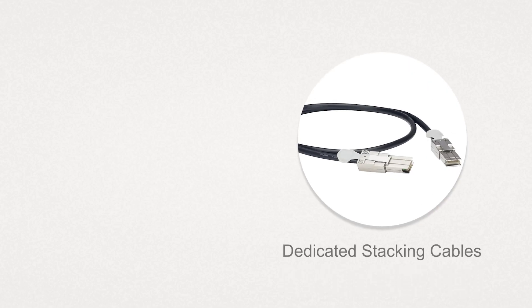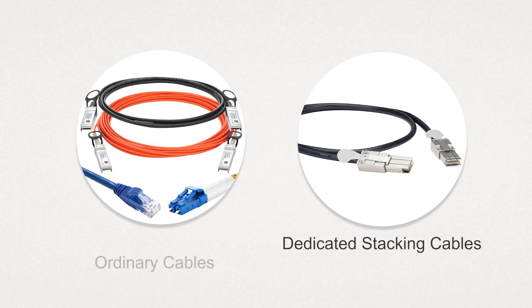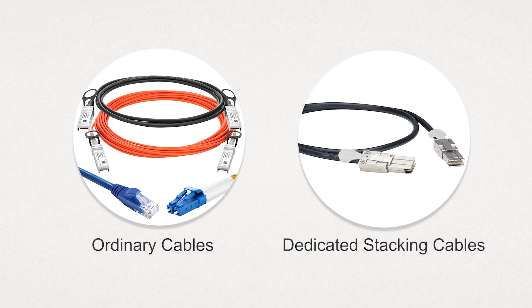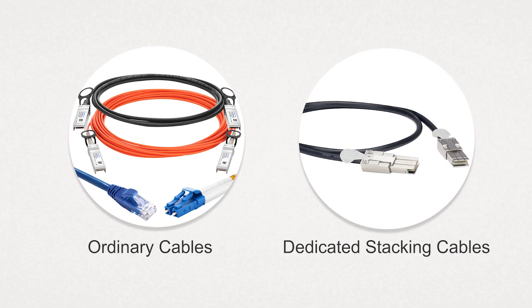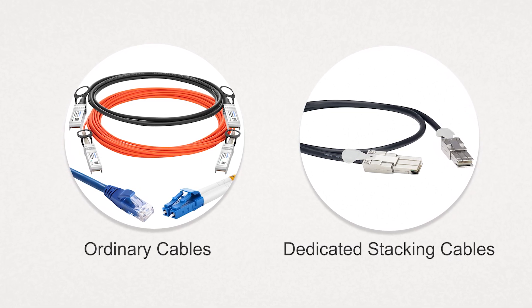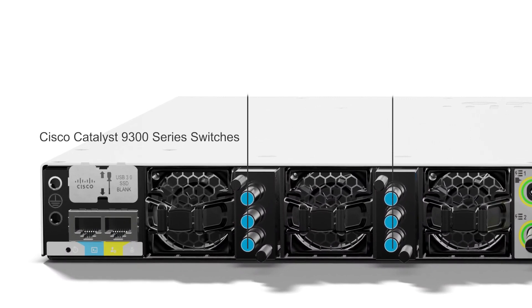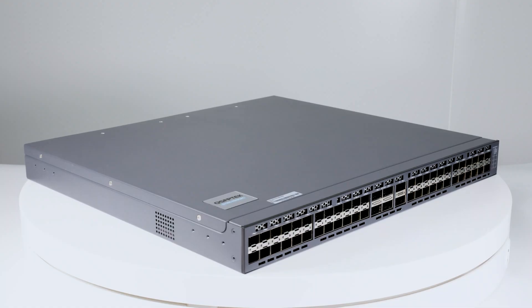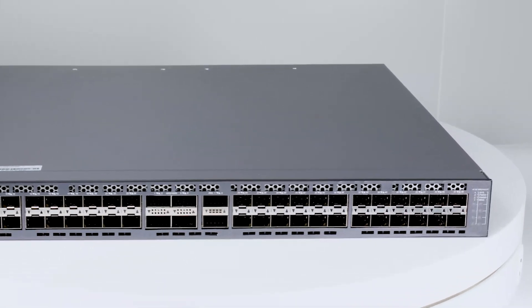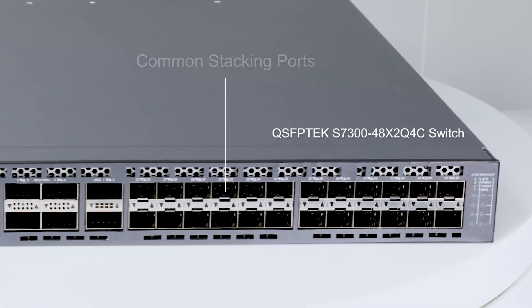Dedicated stacking cables are not ordinary Ethernet port cables. There is no unified standard, and the specifications of different switch vendors are different, with purchase costs typically higher. For instance, the Cisco Catalyst 9300 switch uses dedicated stacking cables, with its two stacking ports located on the rear panel of the switch to support the StackWise 1T 480 architecture. The appearance of dedicated stacking cables is quite different from standard cables, making them non-interchangeable.